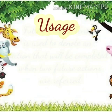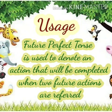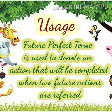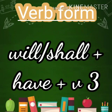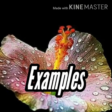We shall see future perfect tense now. It is used to denote an action that will be completed when two future actions are referred. For the completed one we will use future perfect tense. The verb form for future perfect tense is will or shall plus have plus V3.